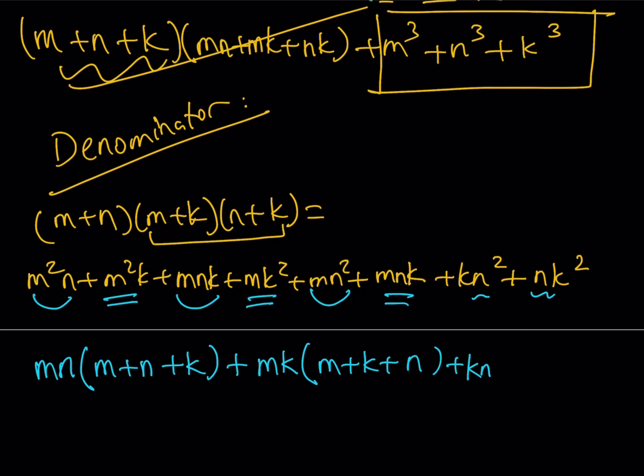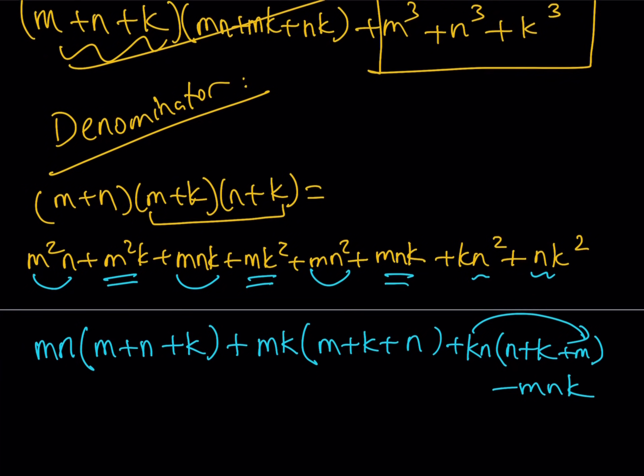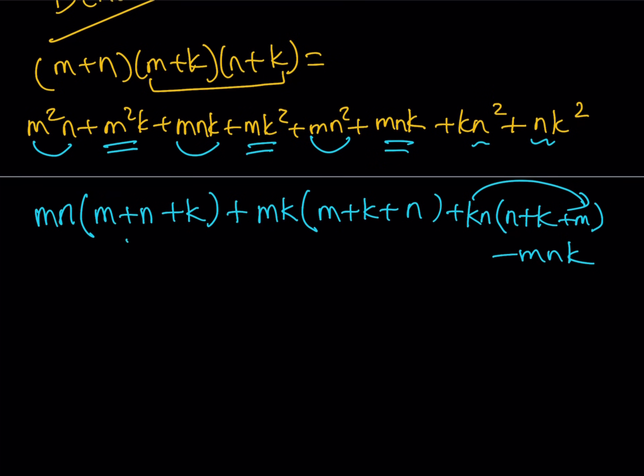But notice that we don't have an MNK here. Well, no worries. We're going to take care of that. So I'll be taking out KN or you can write it as NK, doesn't really matter. And this is going to give you N plus K. But I'd like to have an M so that we follow the same pattern. But notice that I'm introducing an extra term, which is MNK, so I have to subtract it. So then the picture will be complete. Now, notice that this is a common factor, M plus N plus K. So let's go ahead and take it out.